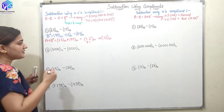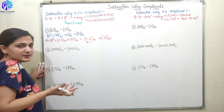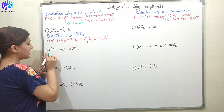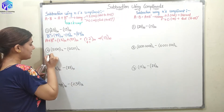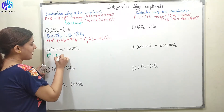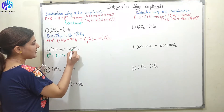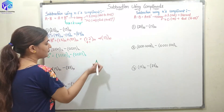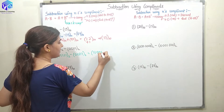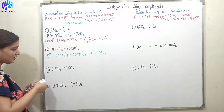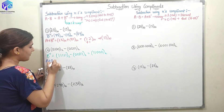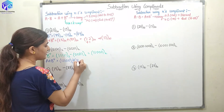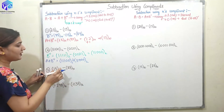Now we have binary numbers and again I will be using the 1's complement — the R minus 1's complement — and we will be finding out B double dash. B double dash will be equal to five 1's minus 00111 base 2, which comes out to be 11000 base 2. Now I have to find out A plus B double dash: 11100 base 2 plus 11000 base 2.